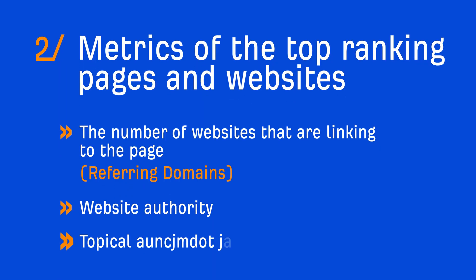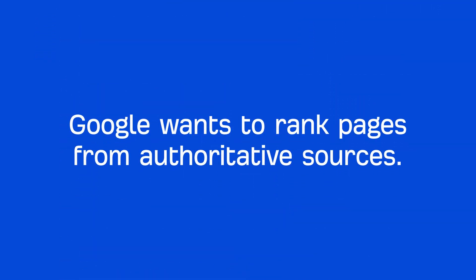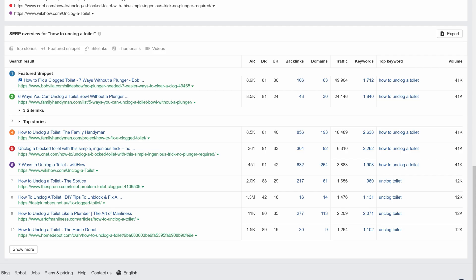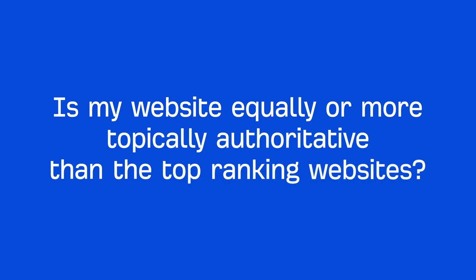Let's move on to the third part, which is topical authority of the top ranking websites. Google wants to rank pages from authoritative sources, and this goes beyond backlinks. For example, if we look at the SERP for 'How to Unclog a Toilet,' you'll see that this DR42 site is outranking much more powerful websites with significantly more referring domains. This page comes from a website that's just about plumbing, so it's likely more authoritative on the topic. The question you need to ask yourself is: is my website equally or more topically authoritative than the top ranking websites?